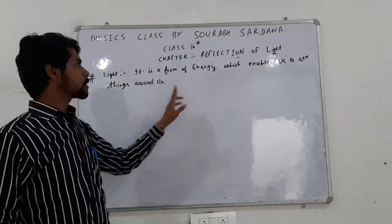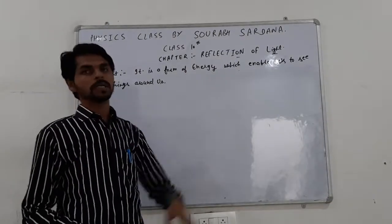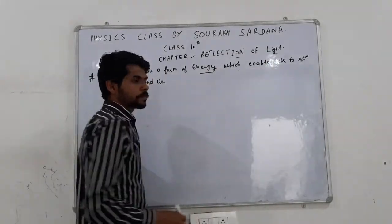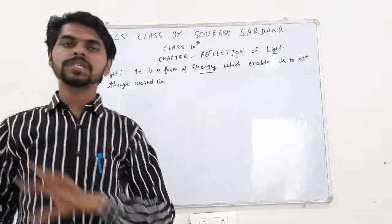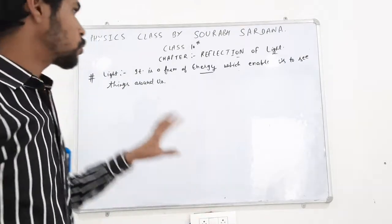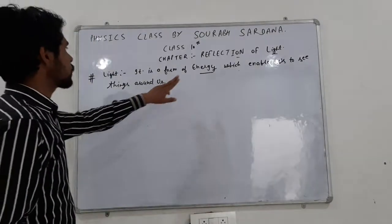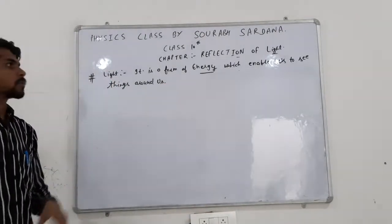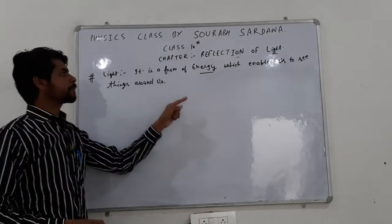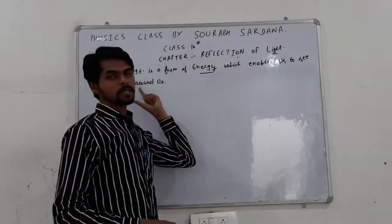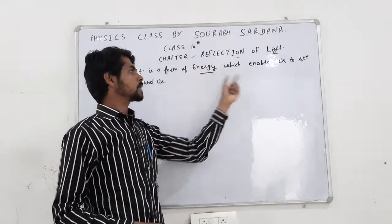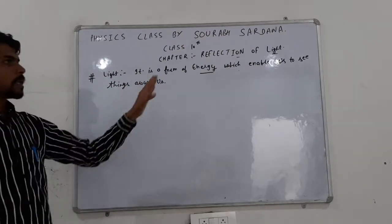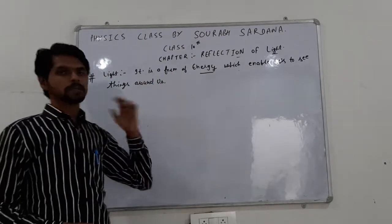Light kuch nahi hai — light ek tarah ki energy hai, jo hume aas paas ki jo bhi chizein hain, unko dekhne mein jo energy wali help karti hai, that is light. So light ka complete name is light energy. Light is a type of energy which enables us to see things around us.